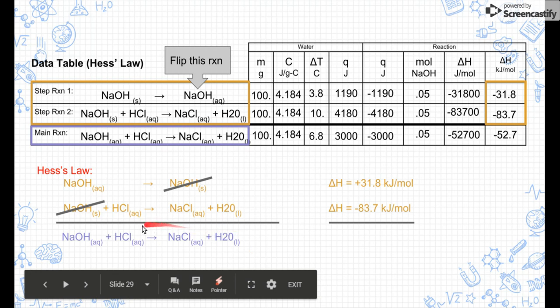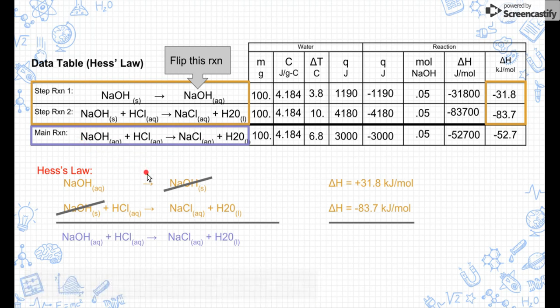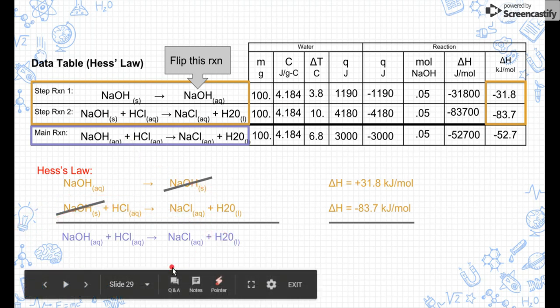And we're going to bring them together down here, similar to what we did when we talked about net ionic equations. So this is that net equation where we add the two step reactants together. Take a look at this reaction. It's pretty amazing. If you see this reaction right here, it's exactly like our main reaction up here. So we just proved using Hess's Law that these two step reactions, if you were to add them together, equal our main reaction.